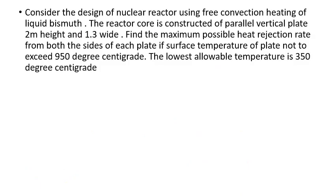The next problem: consider the design of a nuclear reactor using free convection heating of liquid metal. The reactor core is constructed of parallel vertical plates of 2 m height and 1.2 m width. Find the maximum possible heat rejection rate from both sides of each plate. The surface temperature of the plate should not exceed 950°C and the lowest allowable temperature is 350°C.